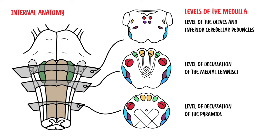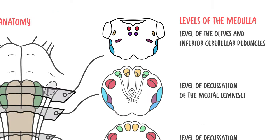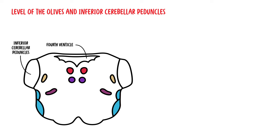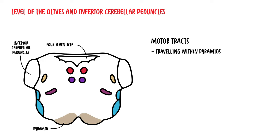Lastly, we will discuss the level of the olives and inferior cerebellar peduncles. This level is very structurally different both externally and internally compared to the previous two levels. At this level, the central canal has expanded into the fourth ventricle, making this region the open medulla. The inferior cerebellar peduncles join the brainstem to the cerebellum, and the motor tracts continue to travel through the pyramids downward toward the level of decussation of the pyramids.